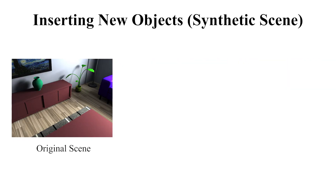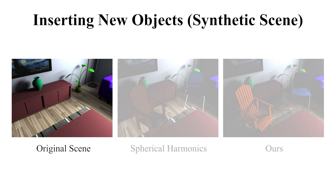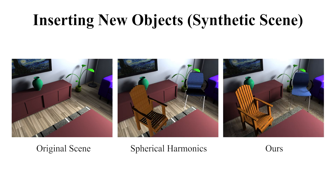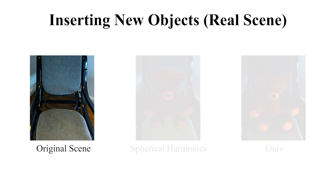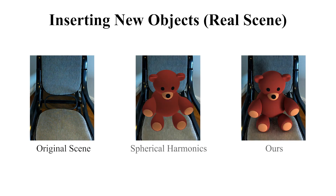When inserting new objects into an existing scene, a naive image compositing approach shows severe illumination inconsistencies. Our method takes advantage of the estimated emission and material parameters to correctly re-render the composited scene.